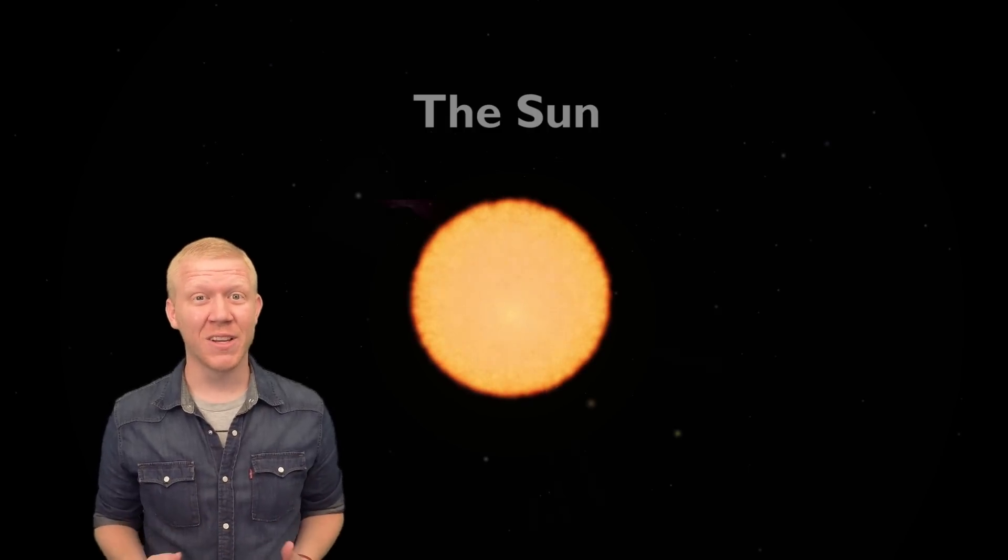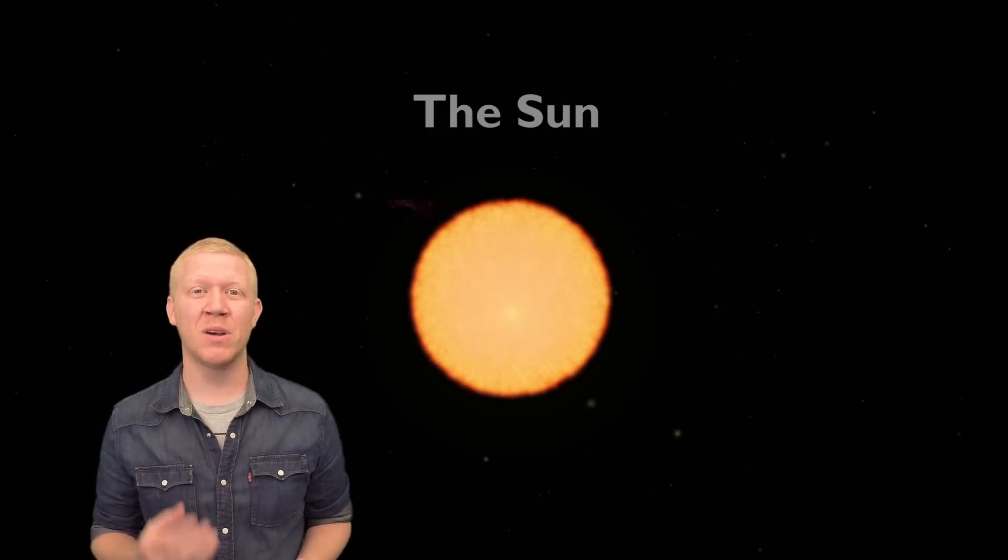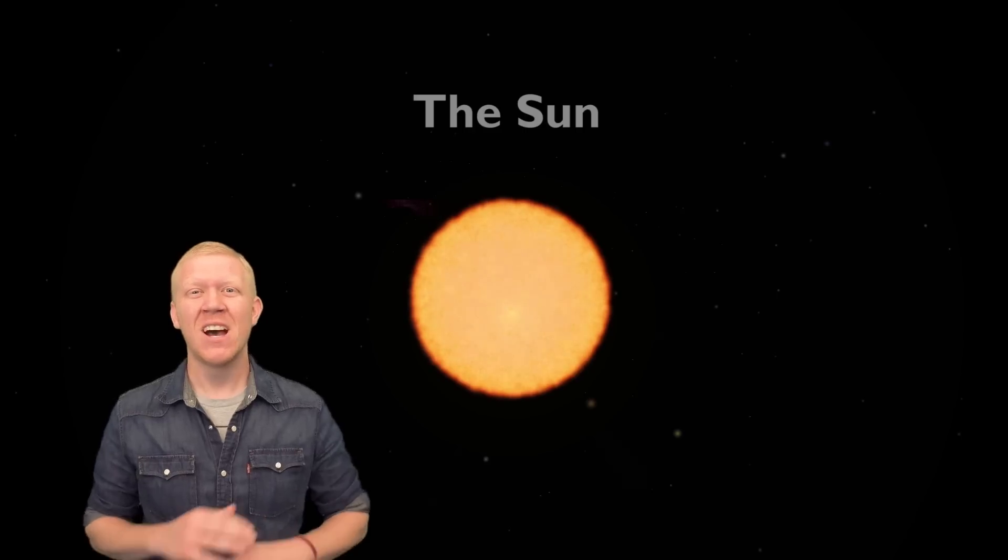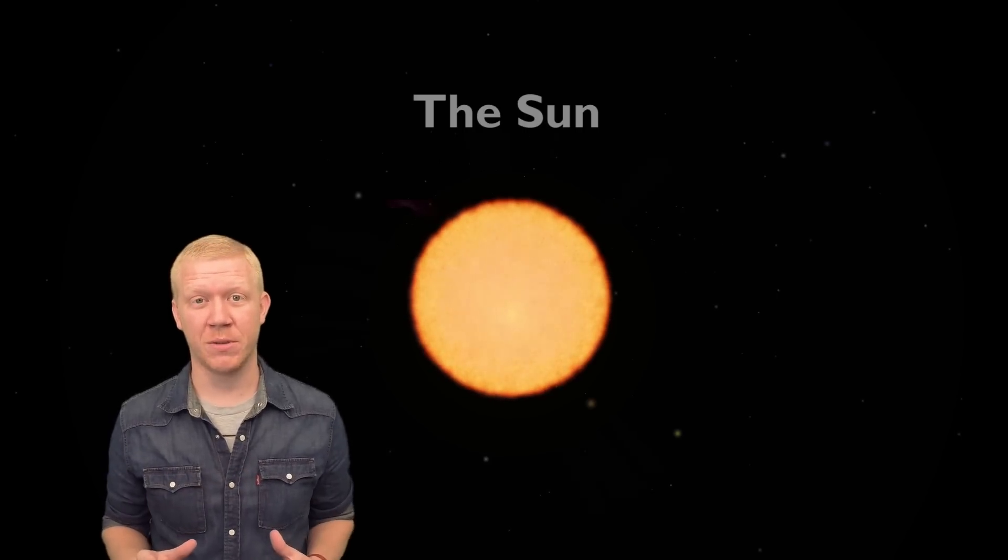The sun is a star, literally. It's a big ball of hot plasma whose mass accounts for more than 99.8% of the mass of the entire solar system. So Earth, Jupiter, Saturn, and all the other planets, all of their moons, all of the asteroids and comets, and everything else in the solar system accounts for little more than 0.1% of its mass.